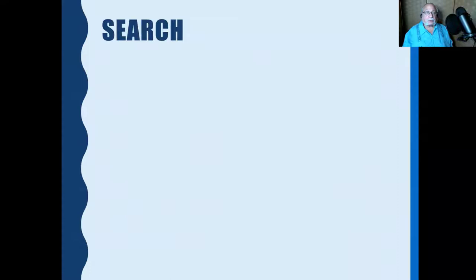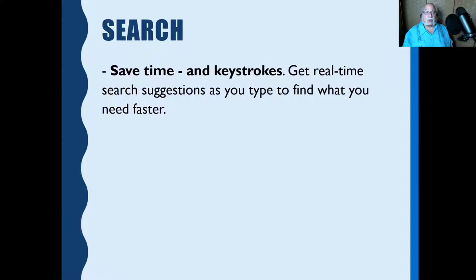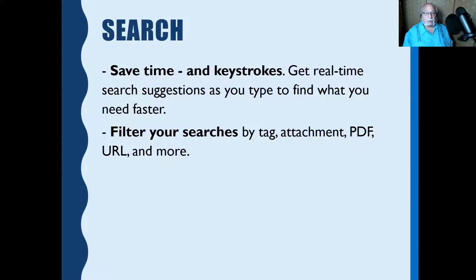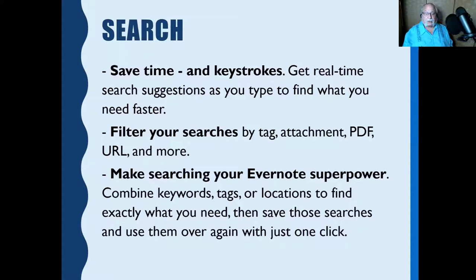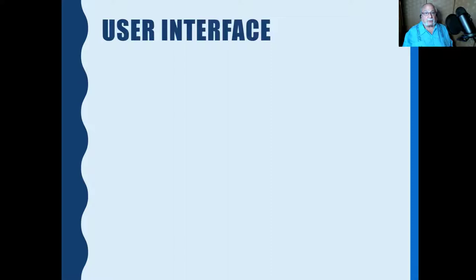The search in Evernote saves time and keystrokes. You get real-time search suggestions as you type to find what you need faster. You can filter searches with a tag, attachment, PDF, URL, and more. You can combine keywords, tags, or locations to find exactly what you need, then save those searches and use them again with just one click. I'm going to talk more about the search and demonstrate it.